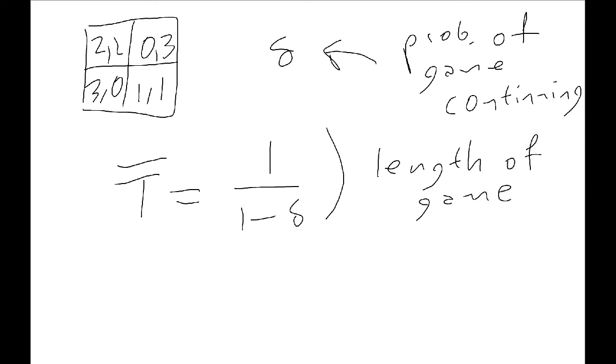And once we've done that, we can get the mean payoff per stage game, so that allows us to get a single number that will allow us to calculate everything. So that mean payoff is just going to be 1 minus delta times the utility of player i when they're playing given strategy R and S.